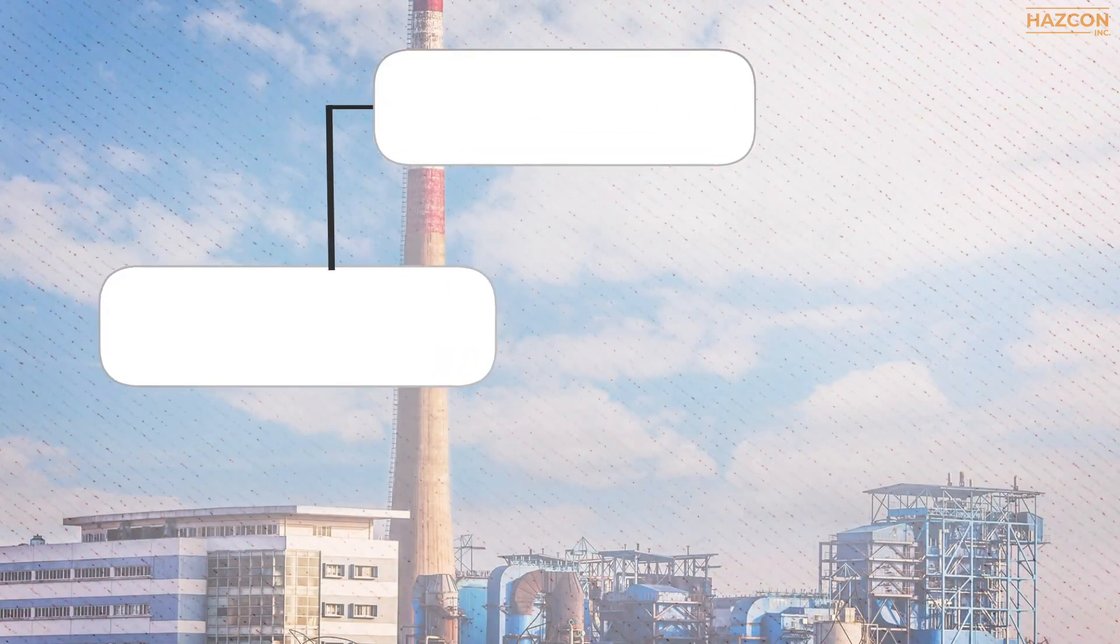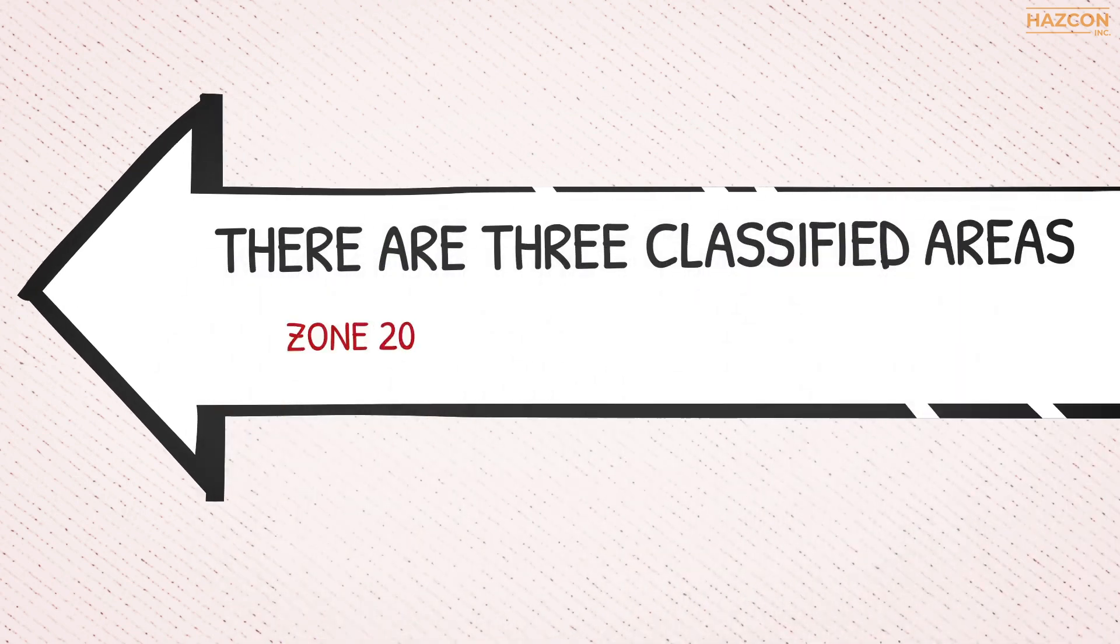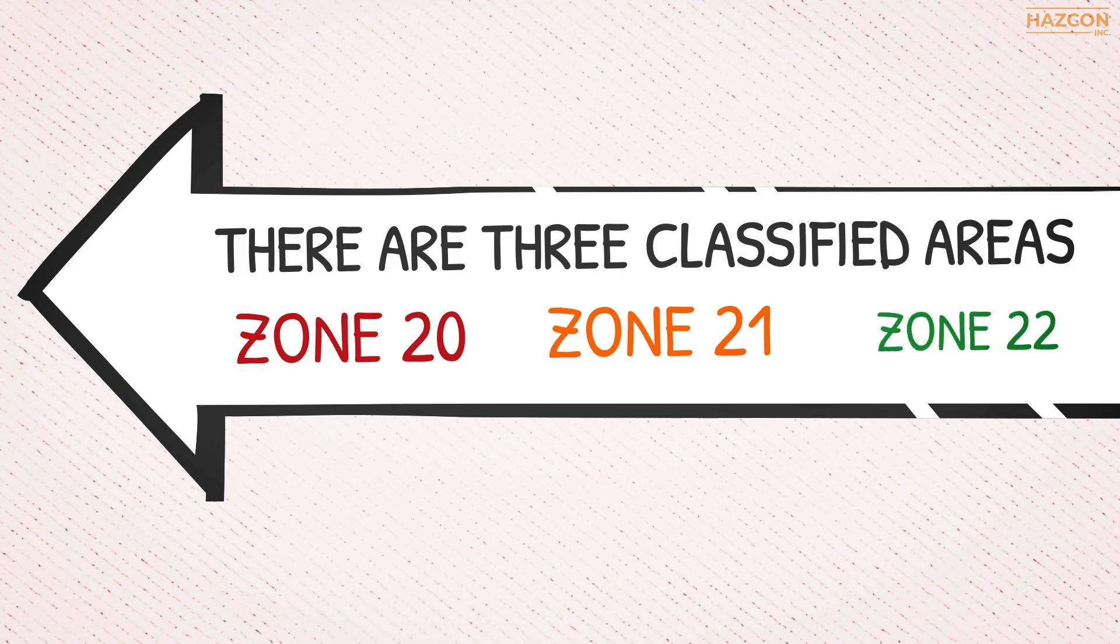America using two different classification systems: the class division and the zone system. There are three classified areas in the zone system that relate to dust explosive areas: Zone 20, Zone 21, and Zone 22.